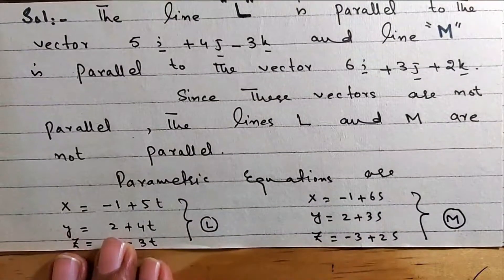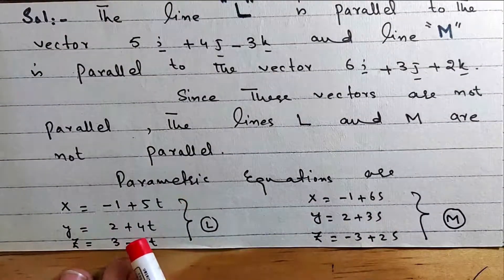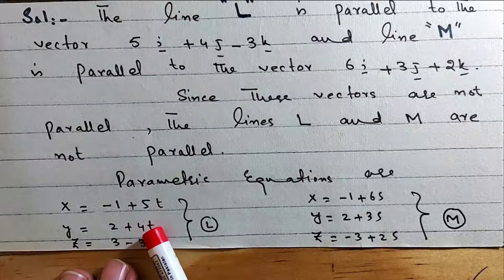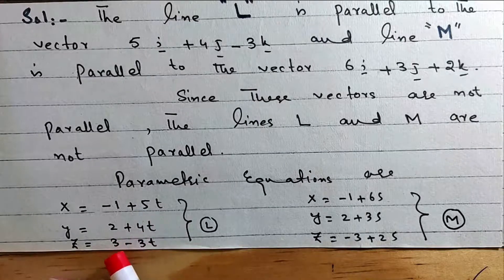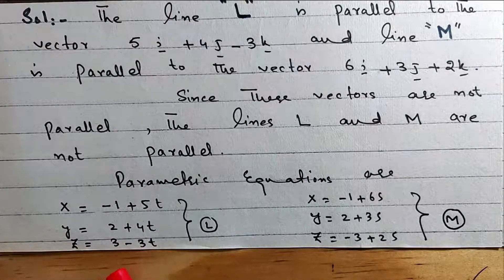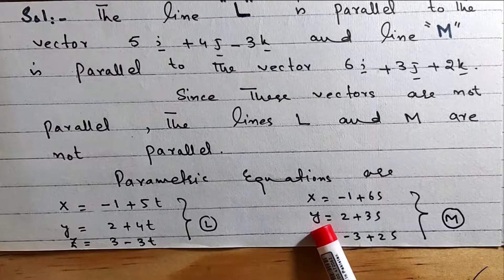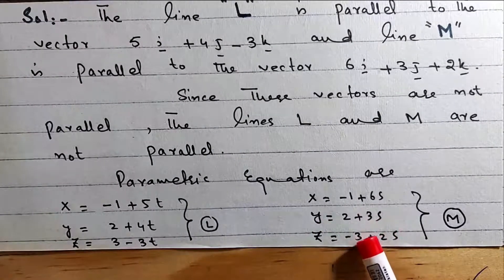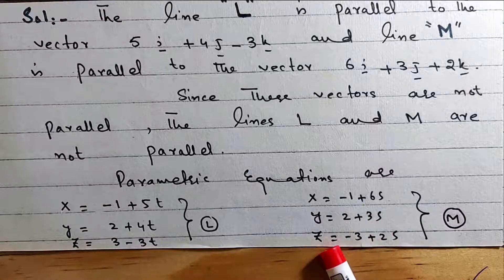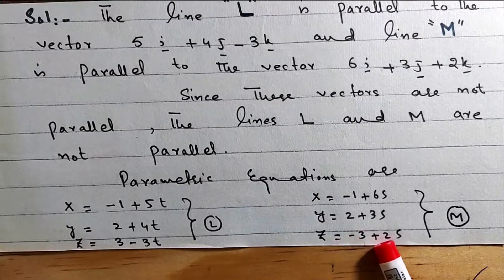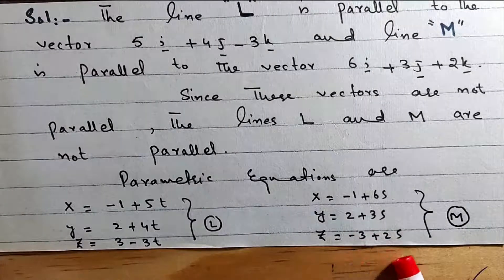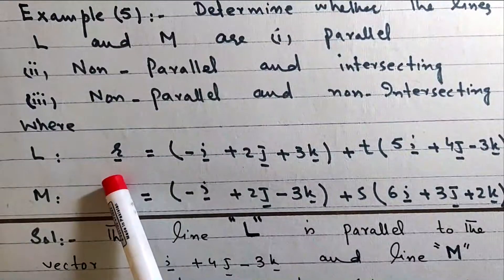Parametric equations: For L: x = −1 + 5t, y = 2 + 4t, z = 3 − 3t. For M: x = −1 + 6s, y = 2 + 3s, z = −3 + 2s. To find intersection, substitute x1, y1, z1 — put x equal to x, y equal to y, and z equal to z — to get equations in t and s.